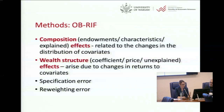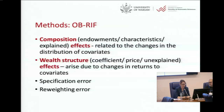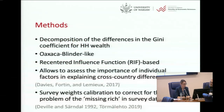Regarding methods: we perform a decomposition of differences in the Gini coefficient for household wealth. It is Oaxaca-Blinder-like but based on the recentered influence function, from the paper by Davies, Fortin, and Lemieux 2017. It allows us to assess the importance of individual factors in explaining cross-country differences. The total difference is decomposed into four components: the composition effect (explained part, related to changes in the distribution of covariates), the wealth structure effect (unexplained, arising from changes in returns to covariates), and two other components — specification error and reweighting error — which should be sufficiently small to validate our specification.